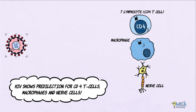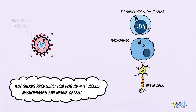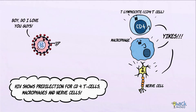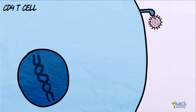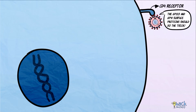HIV shows a predilection for T lymphocytes, especially CD4+ T cells, macrophages, and nerve cells. The HIV virus attaches to the target cell, such as a CD4+ T cell, via the cell's CD4 receptor, achieving this via its GP120 and GP41 surface glycoproteins.